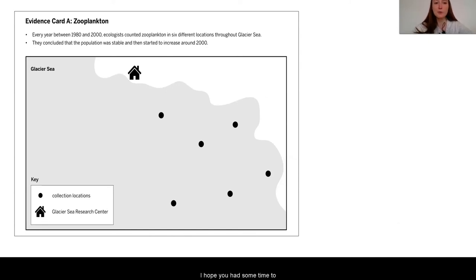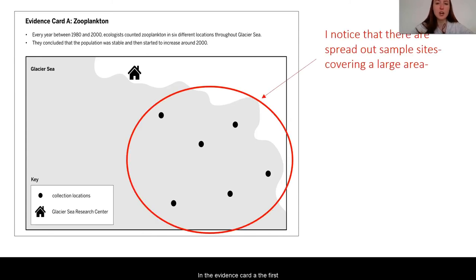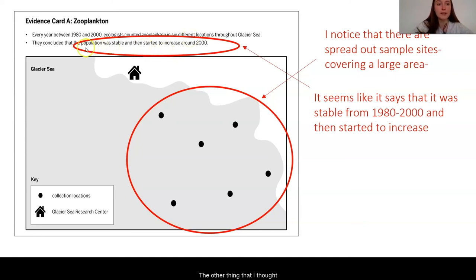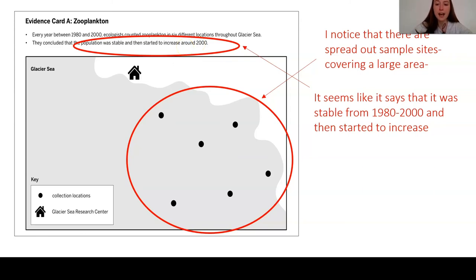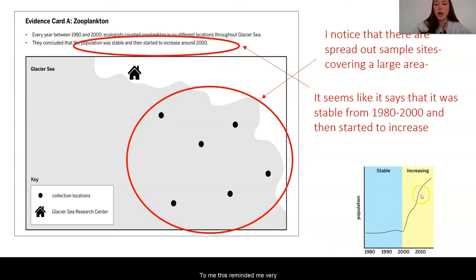I hope you had some time to look through the evidence and make your own thoughts and annotations. I'm going to share a little about what I noticed. In evidence card A, the first thing I noticed was that the sample sites are spread out in the glacier sea — some close to shore, some out in the middle, and there are six different locations. The other important thing was that the population was stable and also began to increase around 2000, just like our moon jelly populations. I sketched a graph to think about this, and it reminded me very much of the moon jelly graphs we have seen in previous lessons.